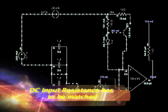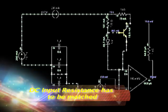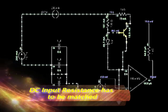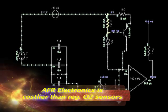To reduce offset voltage, the designer must ensure that the DC resistance looking out of each input is also matched. This is the reason why AFR circuits are more costly than normal O2 sensors.